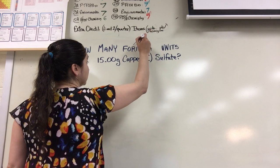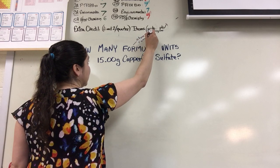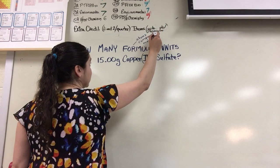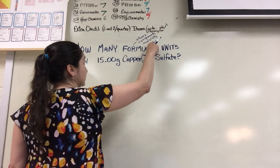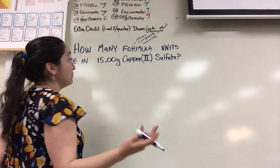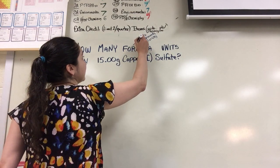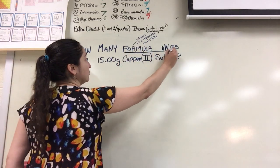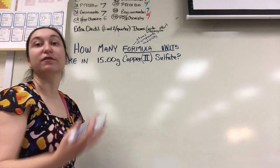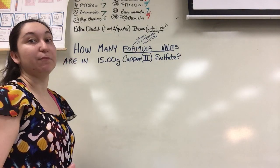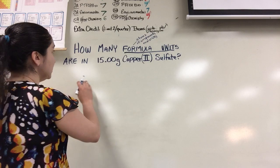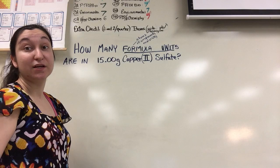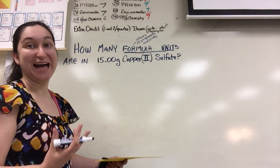When I say formula units, I'm literally going to be talking atoms, compounds, molecules. This is nonmetal with nonmetal. We're going to be dealing with ionic compound here. So when I say formula units, I'm talking about the compounds, number of compounds, in a given something.